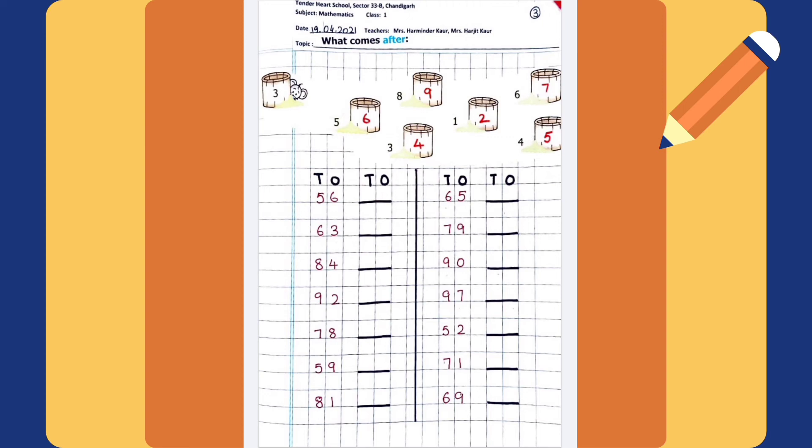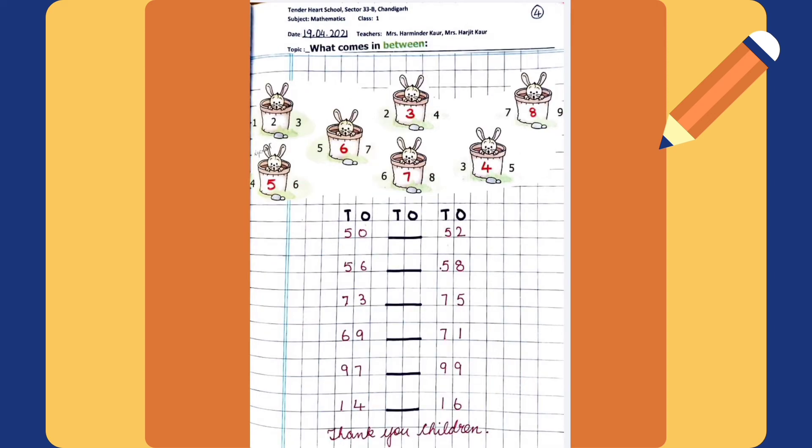Next row. 65 dash, 79 dash, 90 dash, 97 dash, 52 dash, 71 dash, 69 dash.